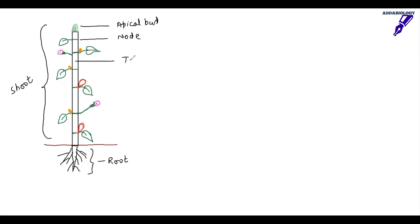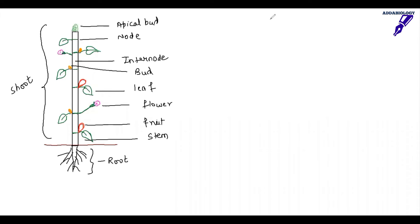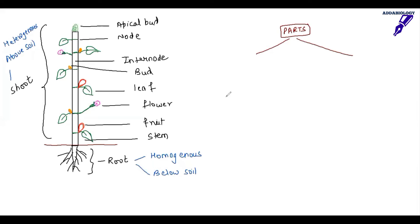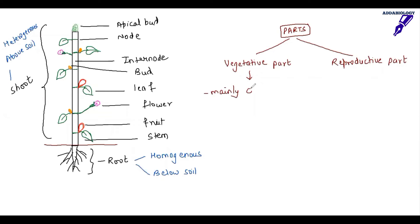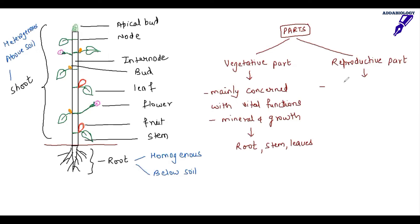The shoot system has apical bud, node, internode, leaves, flower, fruits, and even buds. The root is homogeneous in nature — it is below the soil — and above the soil is the shoot, which is heterogeneous. There are two major parts of any plant: one is the vegetative part and the second is the reproductive part. The vegetative part is mainly concerned with vital functions helping in the growth of root, stem, and leaf.